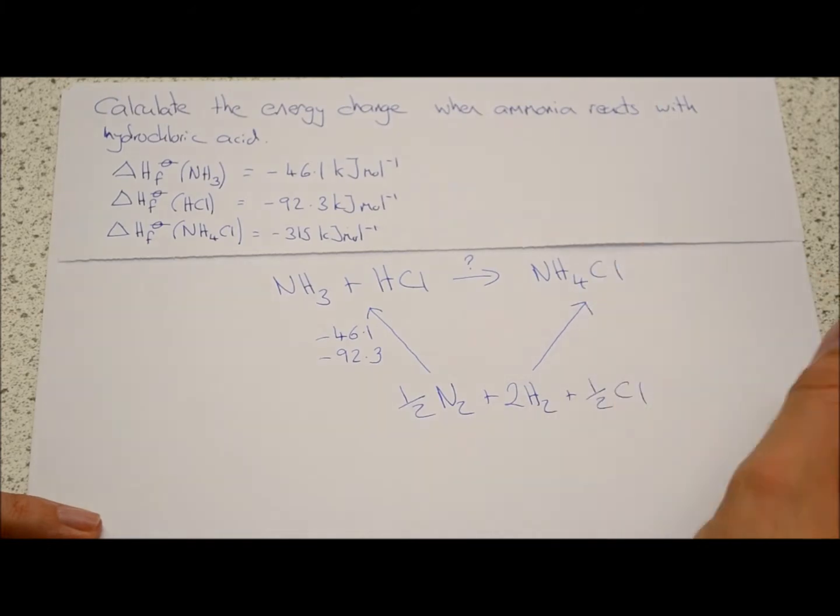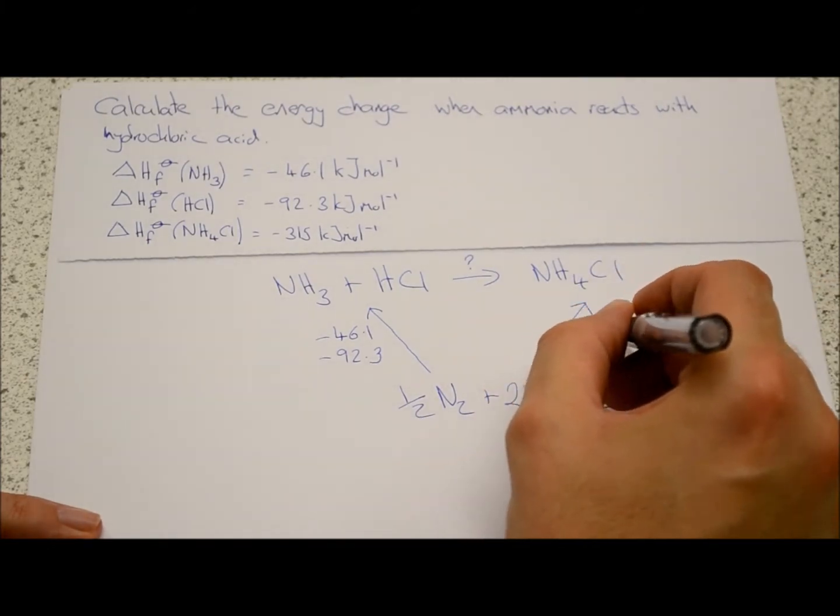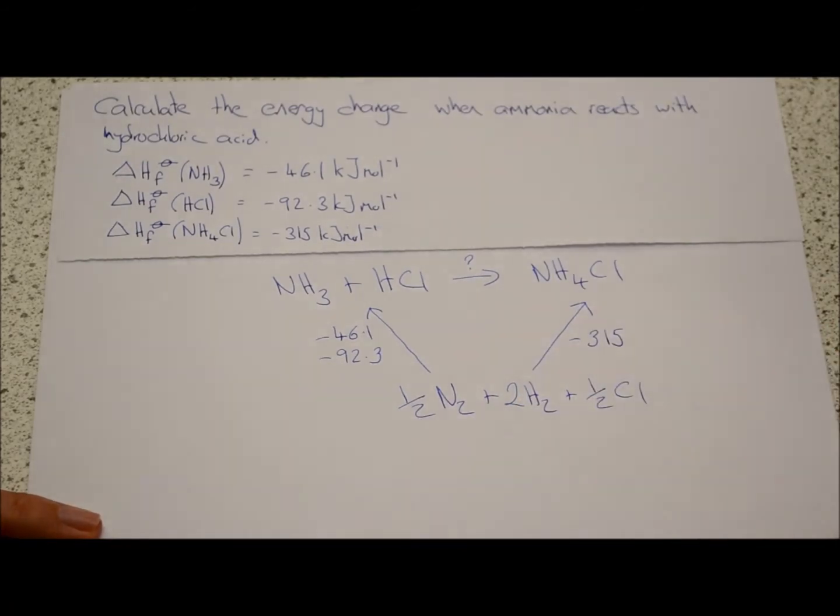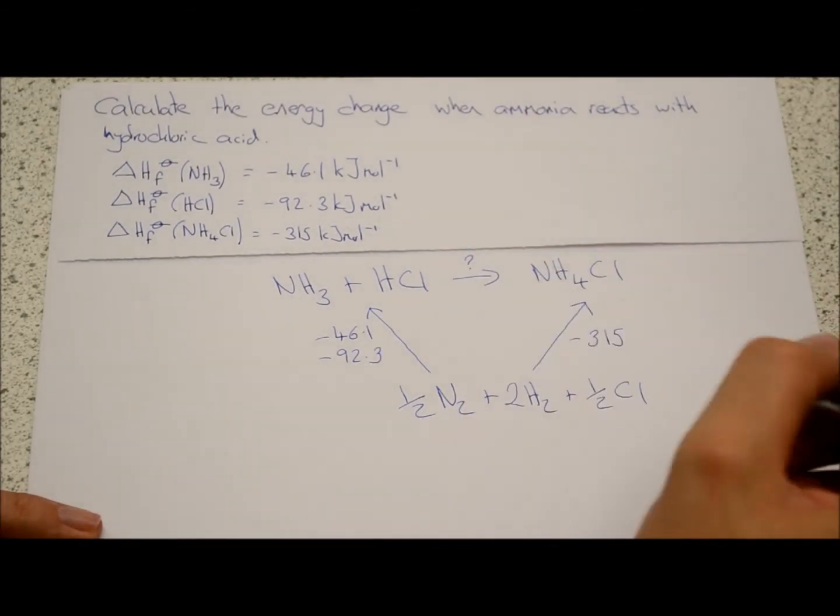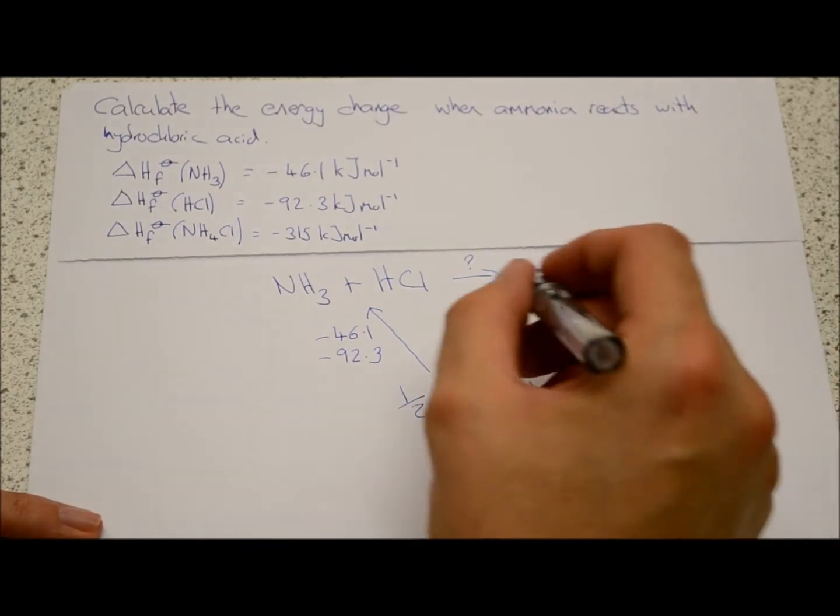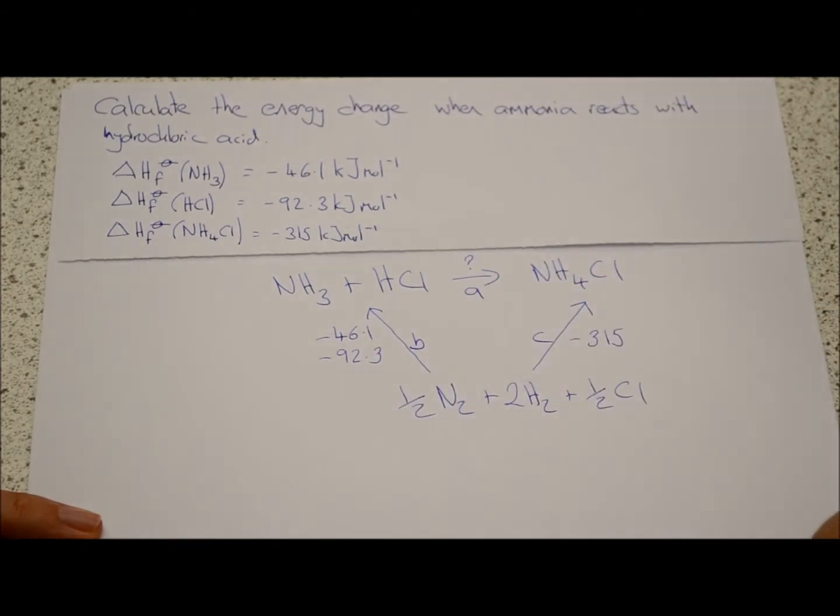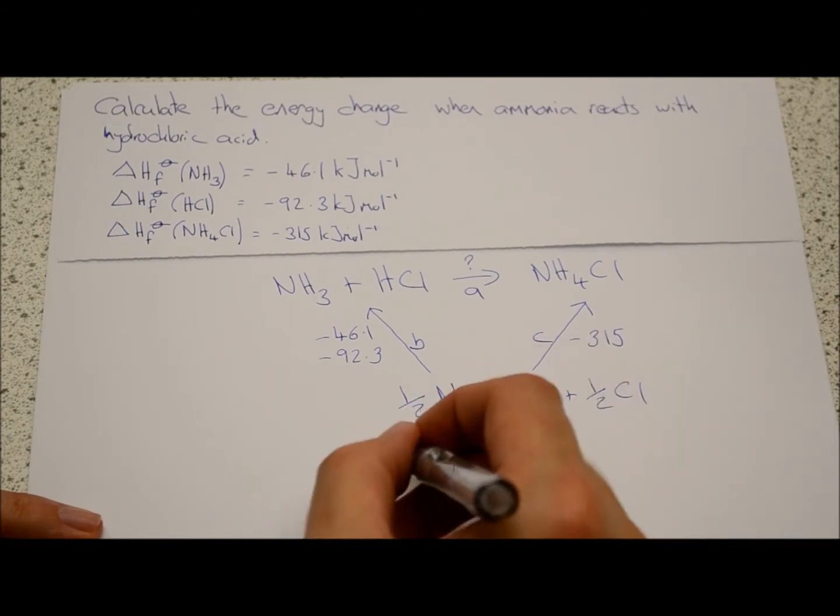And this is ammonium chloride, this one species, and that's minus three hundred and fifteen kilojoules per mole. Now to make sure we get the signs right, it's easy if we give each path a letter. So this one is A, this one will be B, and this one will be C.